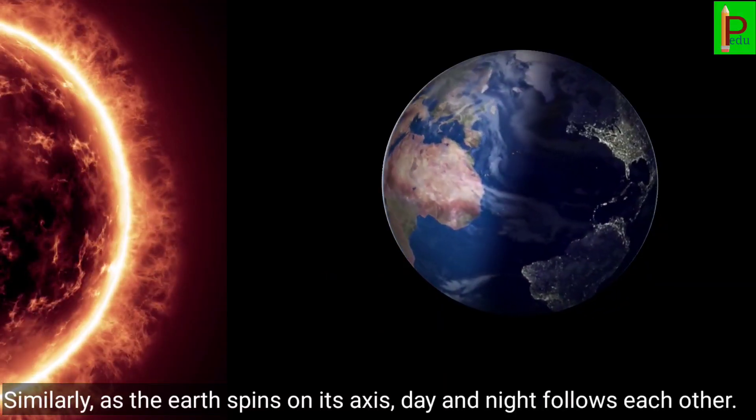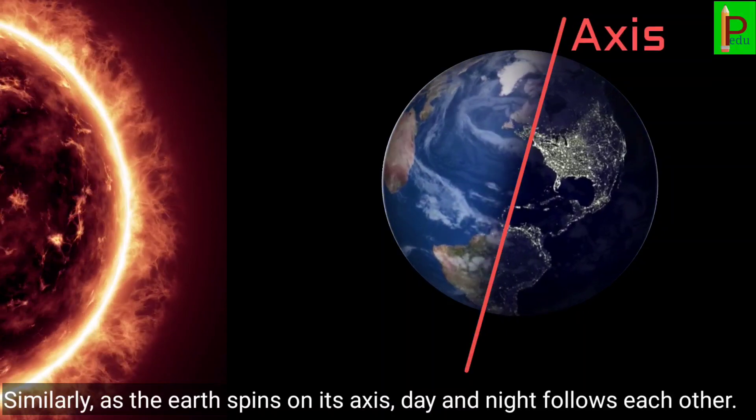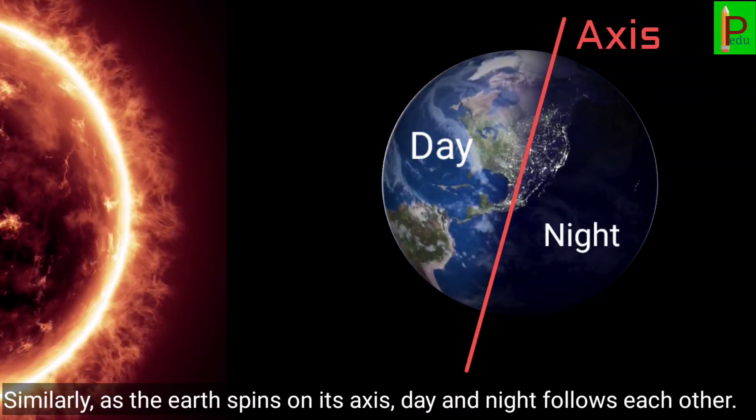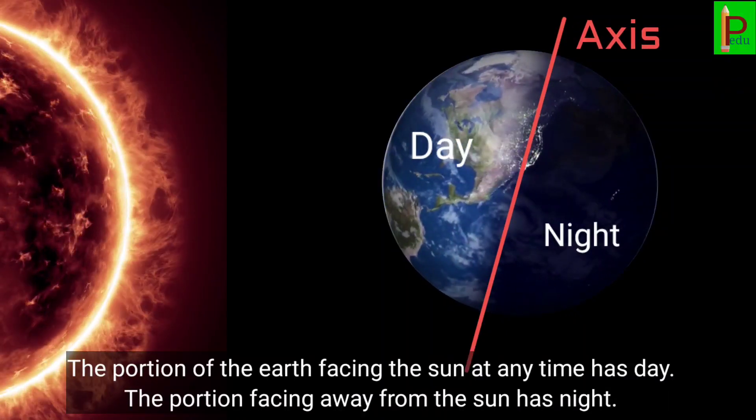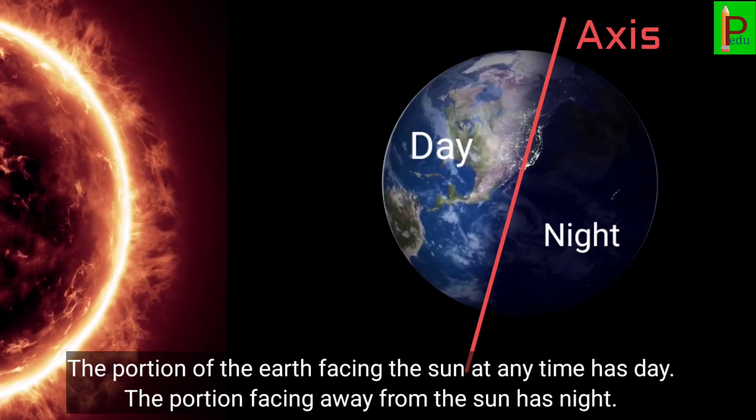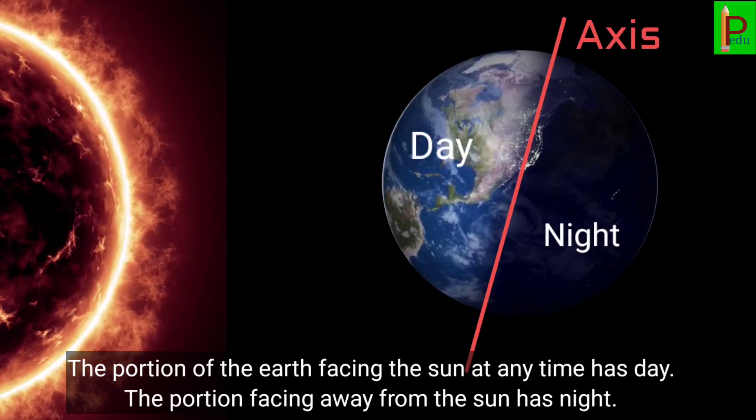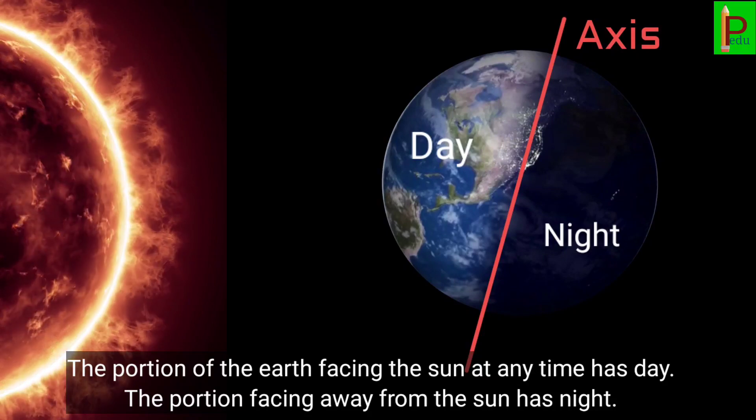Similarly, as the earth spins on its axis, day and night follow each other. The portion of the earth facing the sun at any time has day. The portion facing away from the sun has night.